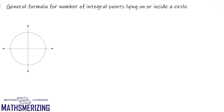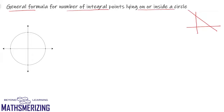Generally in coordinate geometry we see questions where we are supposed to find the number of integral points — that is, the number of points having both coordinates as integers — lying inside a triangle formed by the coordinate axes and a given line. Today we wish to explore if there is any general formula for the number of integral points lying on or inside a circle of the form x² + y² = a², where a belongs to the positive integers.